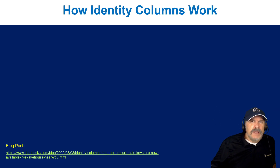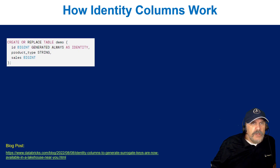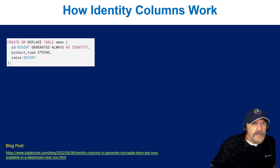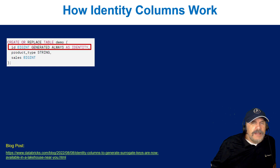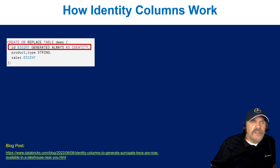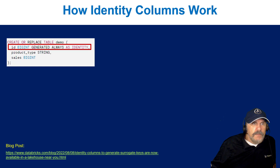Let's talk about how identity columns work. In Databricks, you create a column just like any other ID — you say it's a BIGINT and it's GENERATED ALWAYS AS IDENTITY. A thing to remember is it must be a BIGINT data type; it can't be an INT. And 'generated always' means it will always generate the value, so you don't have to worry about it once you create it.